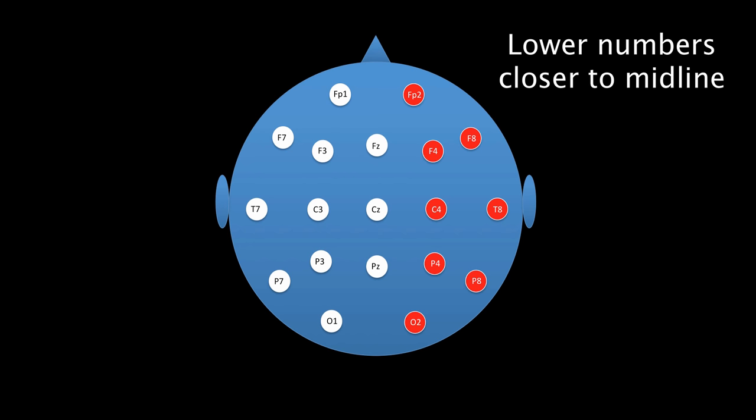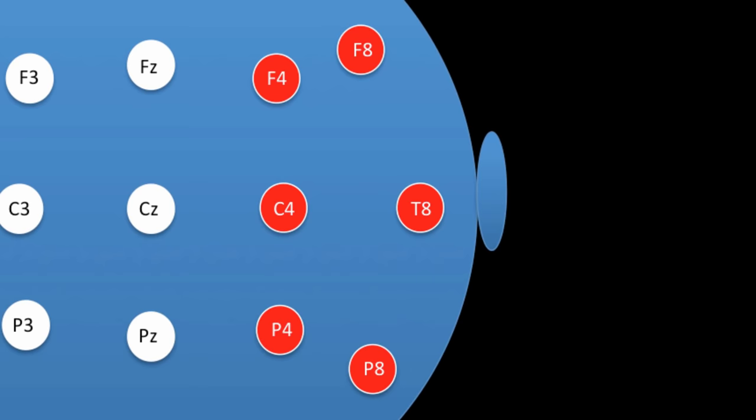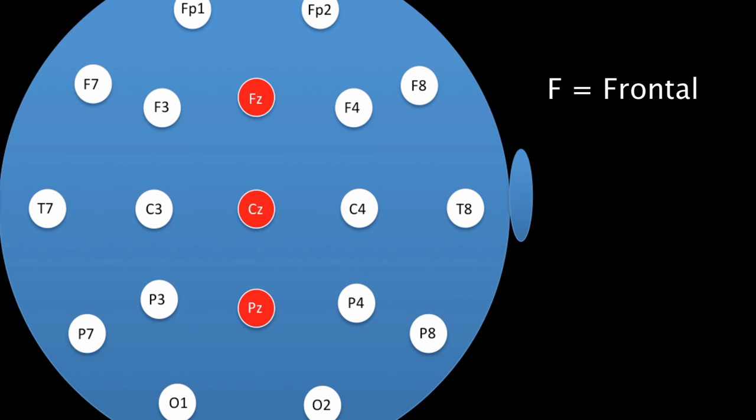In general, lower numbers mean that the electrode is closer to the midline. So you can see here that C4 is closer to the midline than T8. And the midline itself is represented by a Z, which stands for zero. The letters are indicators of the position on the head. In this central chain of electrodes, you can see that the F stands for frontal, the C for central, and the P for parietal.